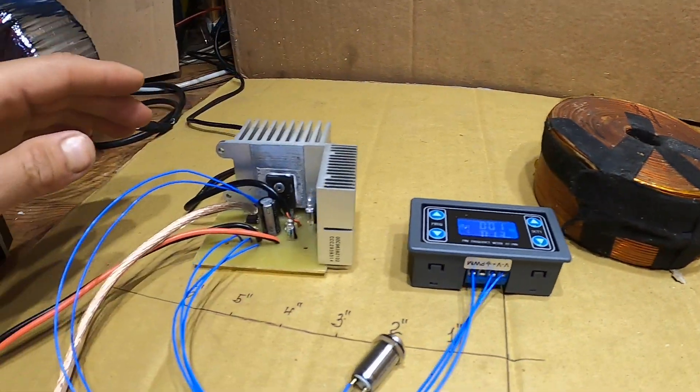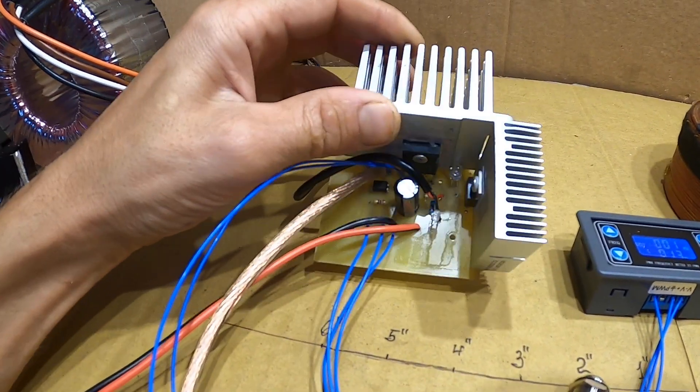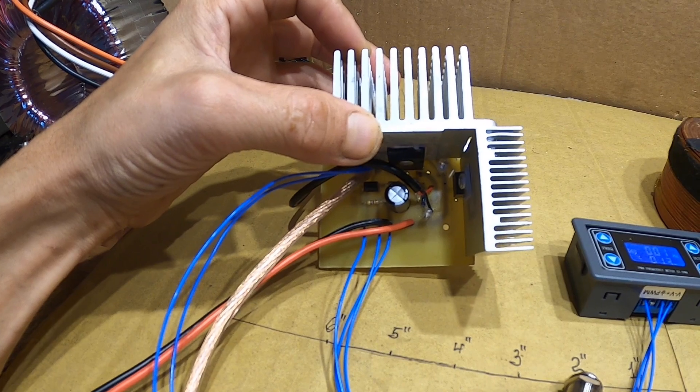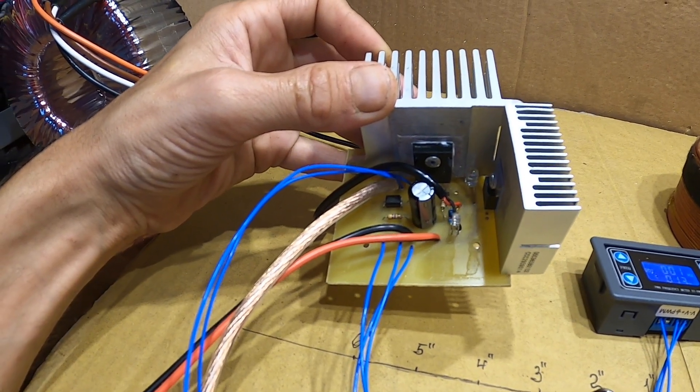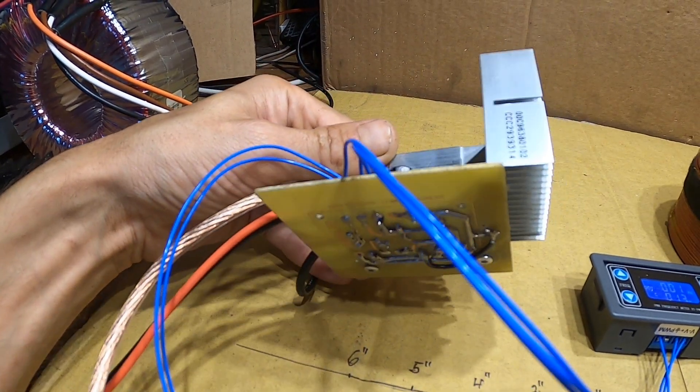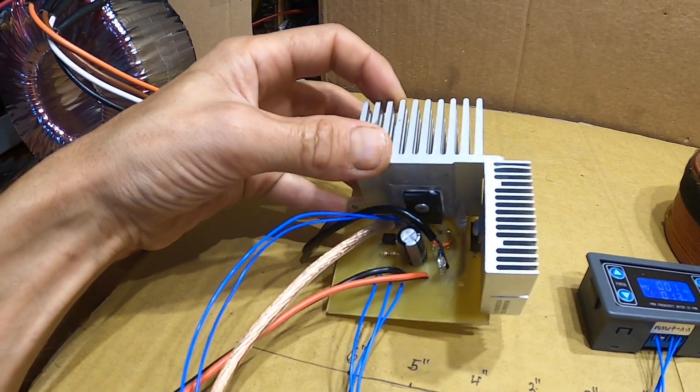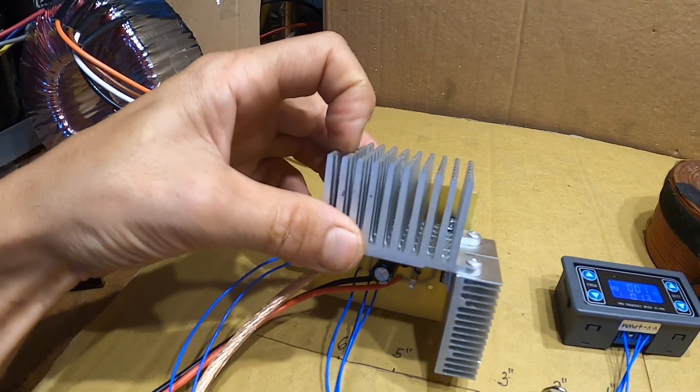This is the PEMF 1B printed circuit board assembled with components on it and heat sinks, all ready to go.